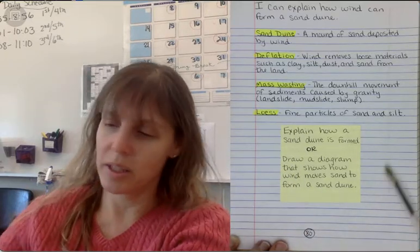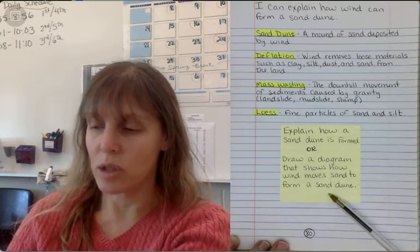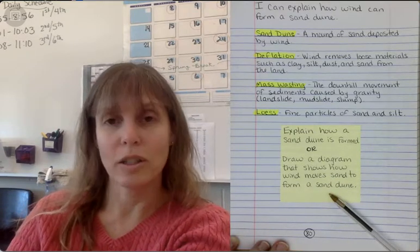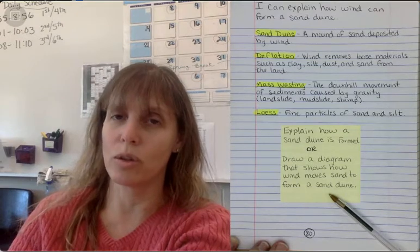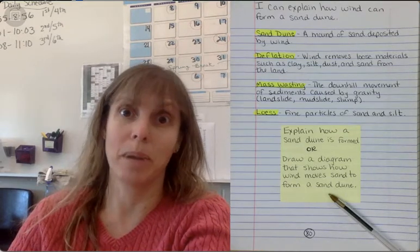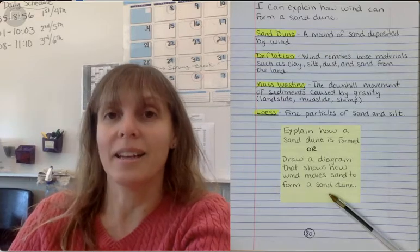So down here, I would like you to explain how a sand dune is formed and draw a diagram that shows how wind moves sand to form a sand dune. You're going to make arrows to show the direction of the wind and basically draw a slope to indicate a sand dune.